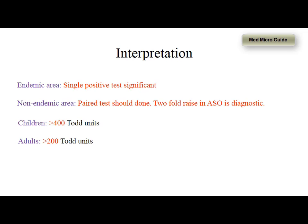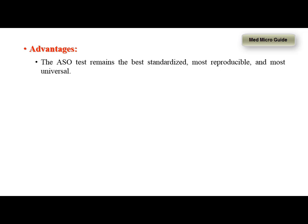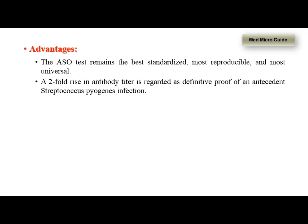In the Indian scenario, more than 400 Todd units for children should be considered as acute rheumatic fever, and for adults, more than 200 Todd units should raise suspicion. The advantages of the ASO test are that it is best standardized, most reproducible, and most universal. A two-fold rise in antibody titers will give a definitive diagnosis of rheumatic fever.